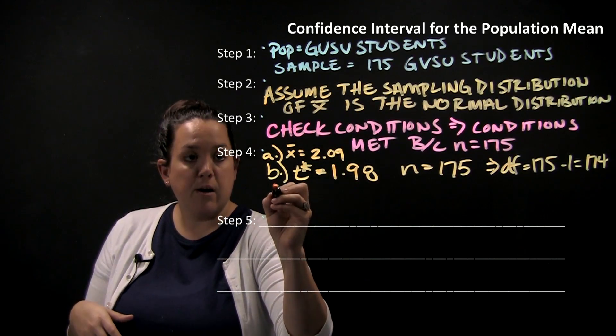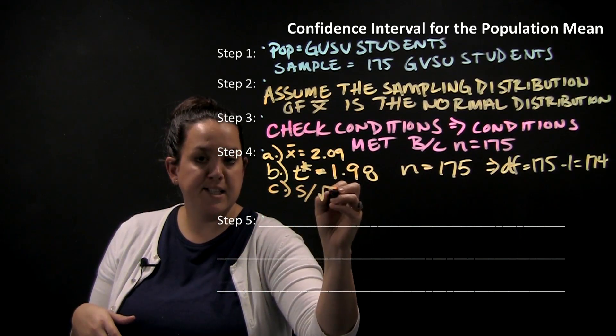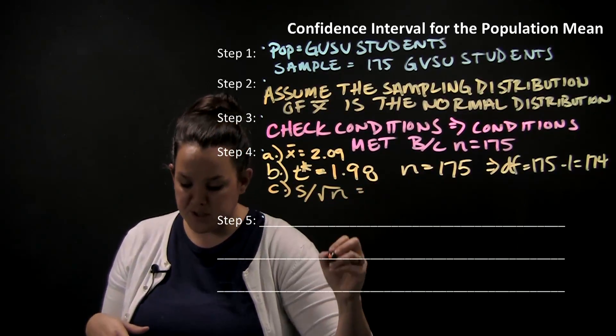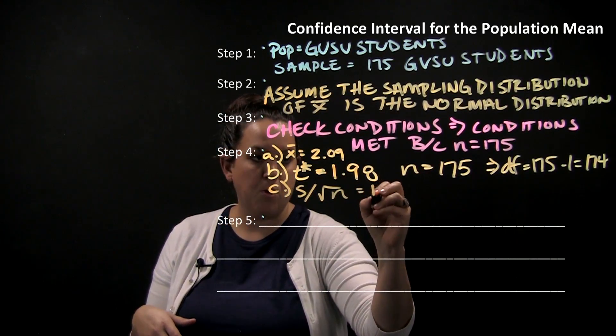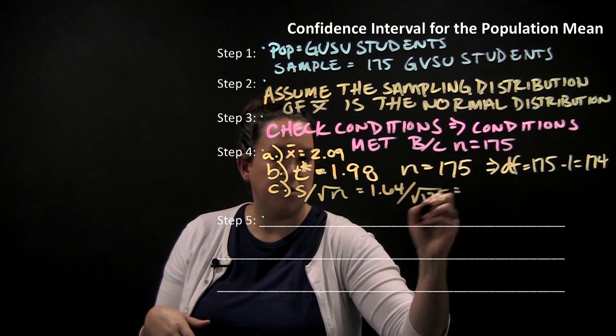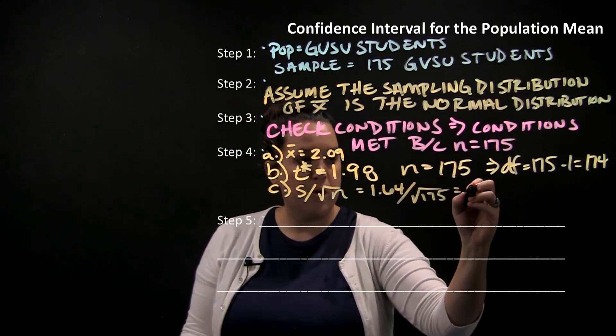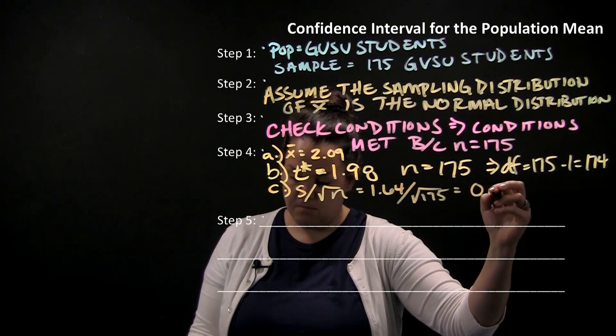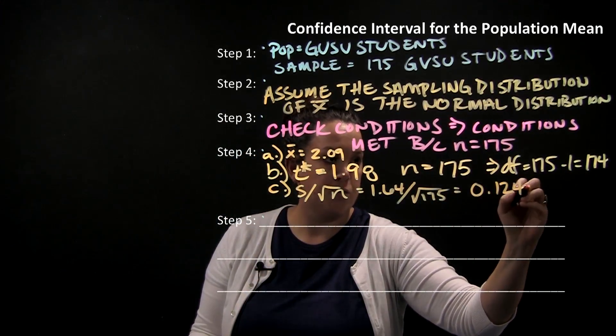Next we have to calculate standard error. Remember that's S divided by square root of n. For this problem, S is 1.64 and we've already identified that n is 175. So for standard error we'll calculate that to be 0.1240.